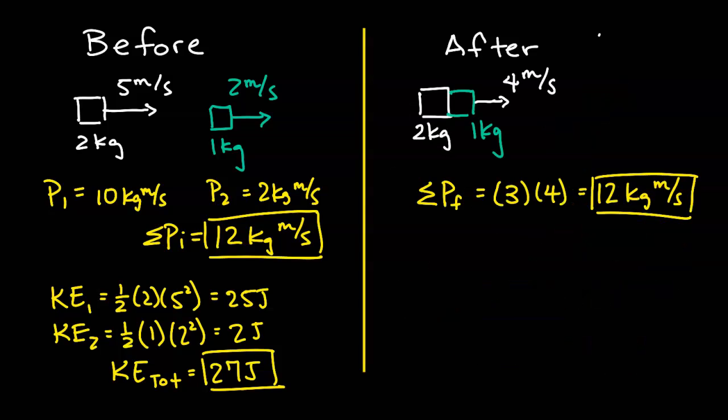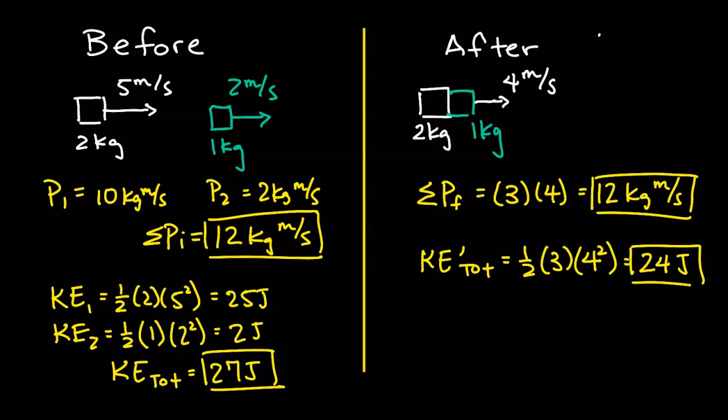Now let's take a look at one more scenario. We have a collision where the two objects stick to each other after they collide, so we know this is a perfectly inelastic collision. When we calculate the momentum of the objects sticking together after the collision, we get 12 kilograms meters per second, which is what we expected because momentum is conserved in an isolated system. Looking at kinetic energy after the collision, using ½mv² with a combined mass of 3 kilograms, we get a total energy of 24 joules — this represents the maximum kinetic energy loss, confirming this is a perfectly inelastic collision.